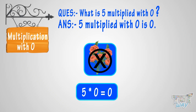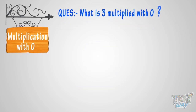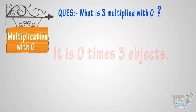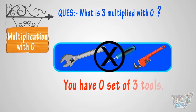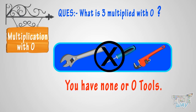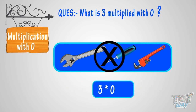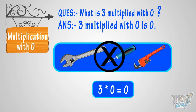Let's take another example. What is three multiplied with zero? It is zero times three objects. See the figure. You have zero sets of three tools. Then how many tools do you have? You have none, or zero tools. This is three multiplied with zero, or zero times three tools. So, three multiplied by zero equals zero.